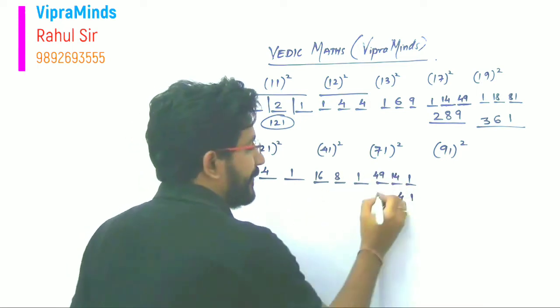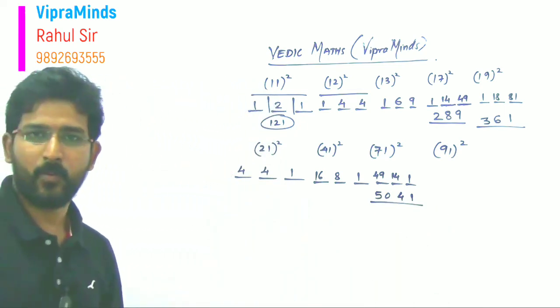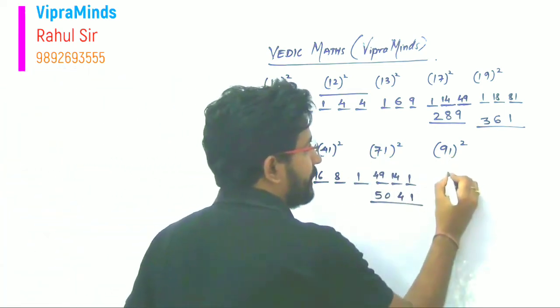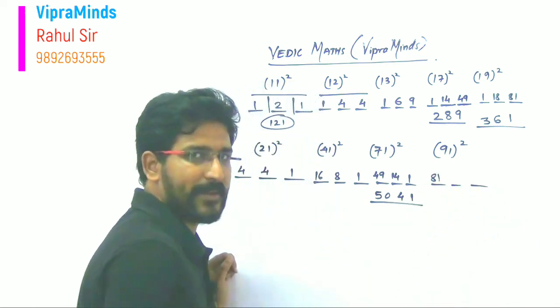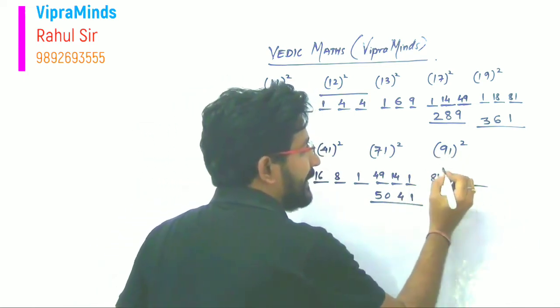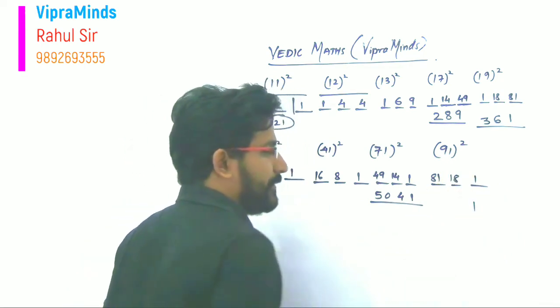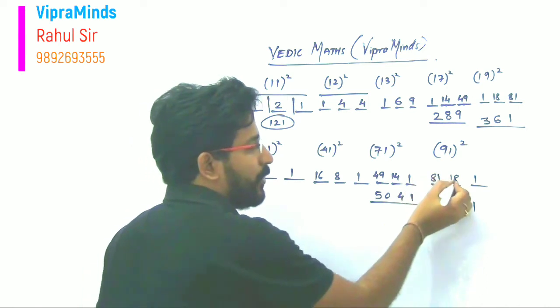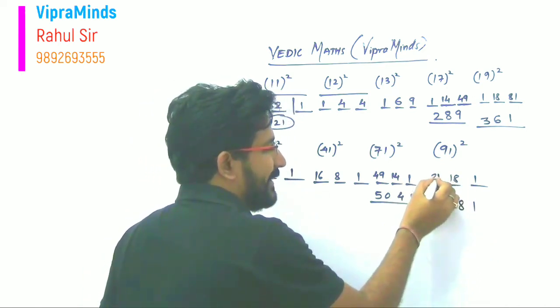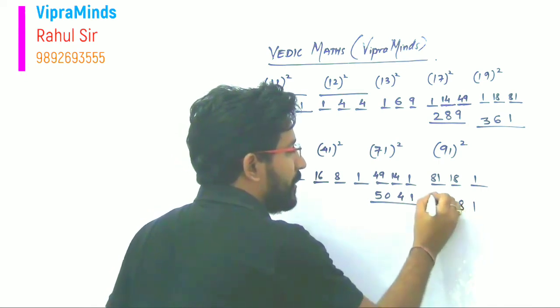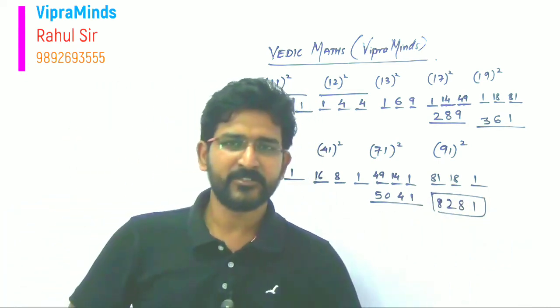Now 91 ka square. Again 81, nine ka square 81. Nine plus nine is 18. One square is one. Now again one as it is. But here block mein one digit hona chahiye, so eight here, one carry forward. It's 81 plus one, 82. So your answer will be 8281.